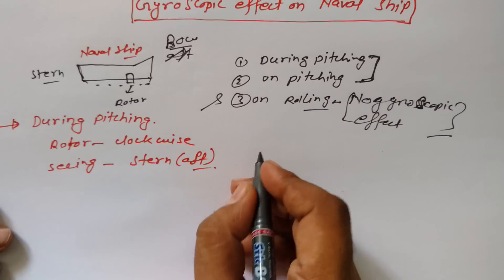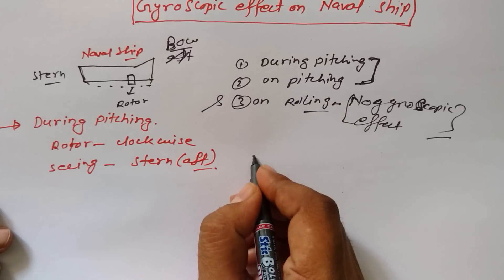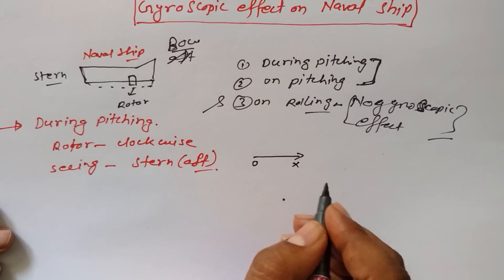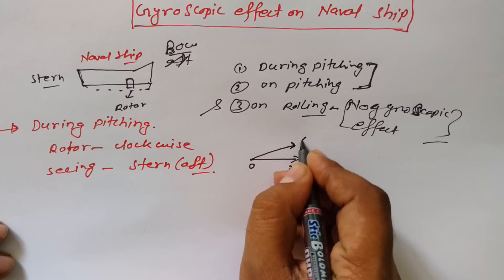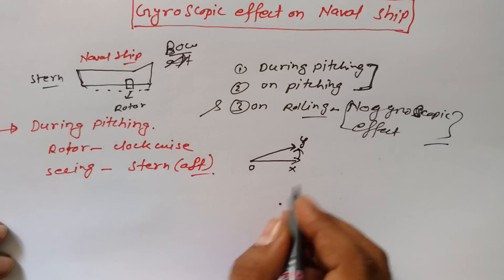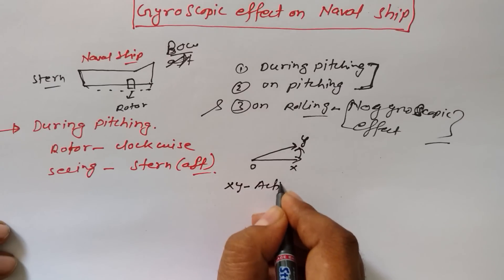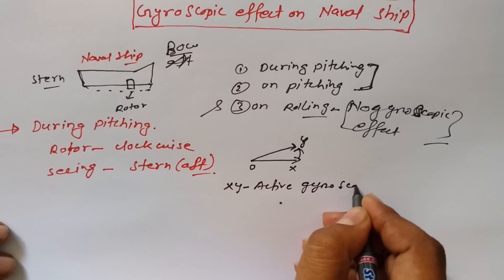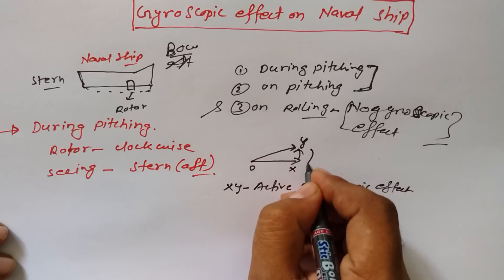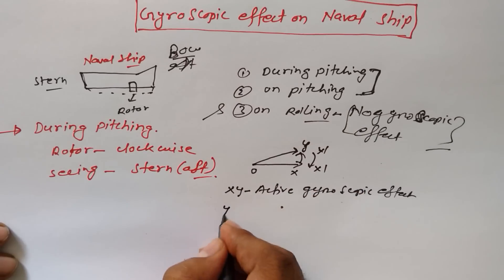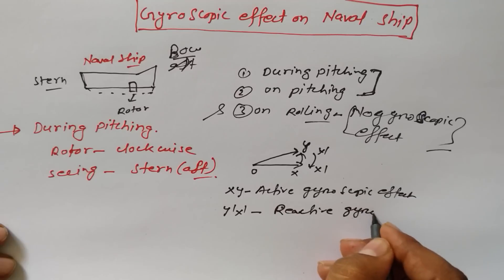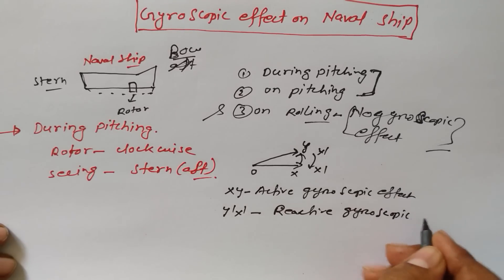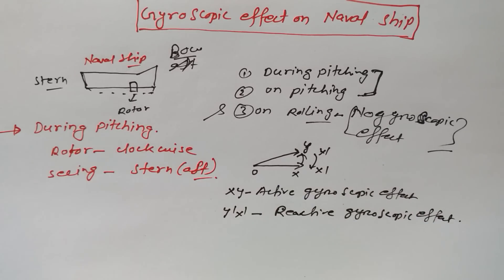Now, suppose the naval ship is going in this direction and this is OX. If it will take a left turn, then the momentum vector would be OY, and because of this, OX to OY is known as the active gyroscopic effect. The reactive gyroscopic effect acts in the opposite direction.